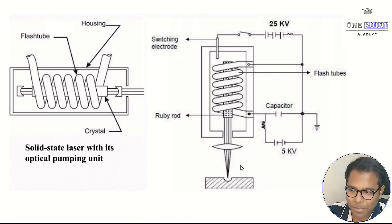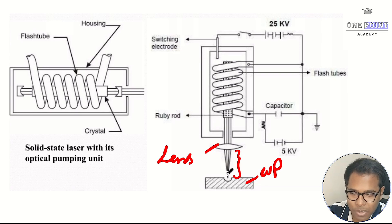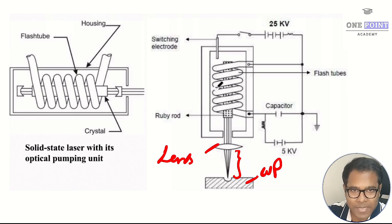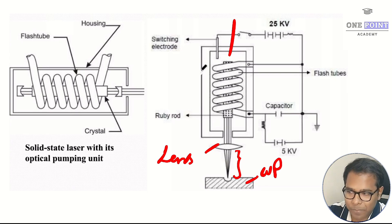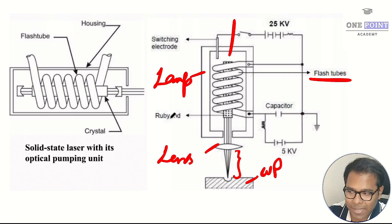Looking at the diagram of the laser beam machining working setup — on the right side image — at the very bottom is the workpiece on which the laser strikes to machine the surface. Above it is a convex lens placed at a certain standoff distance, which converges the laser to a single common point and increases its overall intensity. The housing is a cube or lamp containing xenon gas or another inert gas. Inside the lamp is a spiral-shaped flash tube, and at the center of the flash tube is the actual crystal — marked here as the ruby rod.